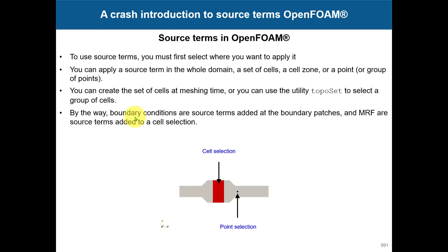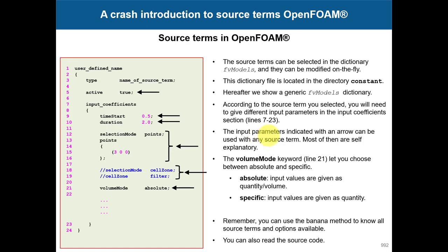At the inlet you have a velocity of one, that is a source term. When I talk about a source term, it's also an equivalent. Imagine that you are selecting a group of cells, you are forcing the velocity to be one or the pressure to be one or whatever. It's something like boundary conditions.